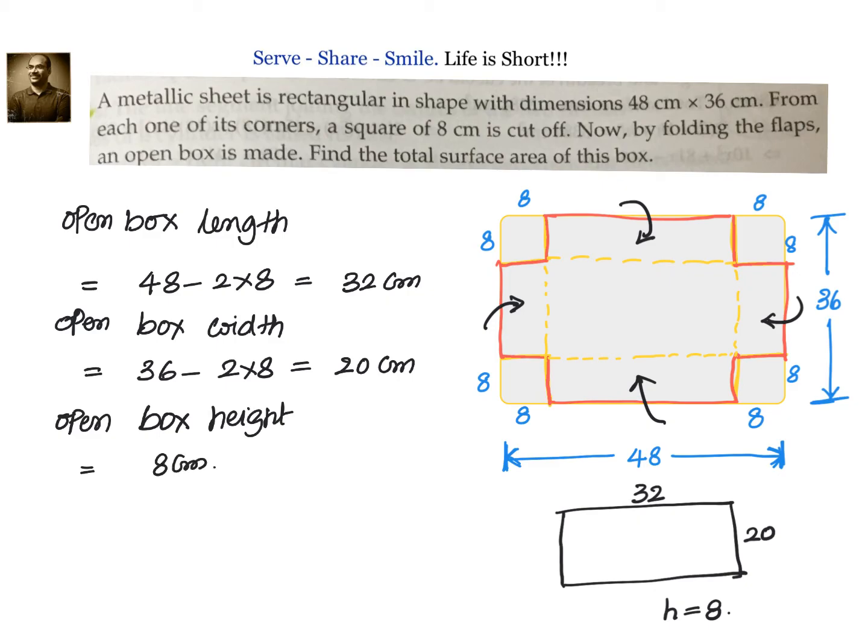Now, what will be the TSA? Remember, it is an open box. That means we should subtract 1LB or we can also do, we can write down. So TSA or total surface area of box is equals to, not the TSA formula we are going to do, it will be LSA plus base. So let us keep the formula there. LSA is 2H into L plus B plus base is LB.